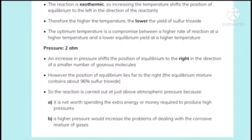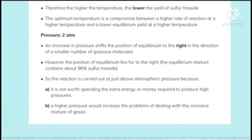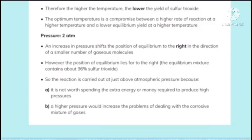The pressure should be around atmospheric pressure. An increase in pressure shifts the equilibrium to the right, in the direction of a smaller number of gaseous molecules. However, the position of equilibrium already lies far to the right, so this reaction is carried out just above atmospheric pressure — because it is not worth the extra energy or money for high pressures, and higher pressure increases problems dealing with the corrosive gas mixture and can also cause pollution.